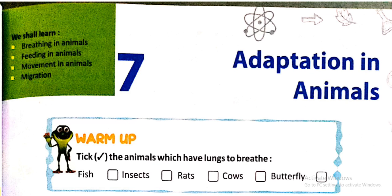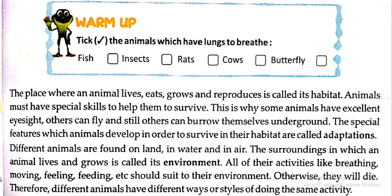One more question is: write the animals which have lungs to breathe. You have to identify the animals that use lungs for breathing. Fish does not, insects do not. Birds have lungs to breathe. Cows also have lungs to breathe. Not a butterfly. So now we are going to start with this chapter.